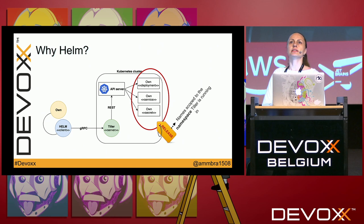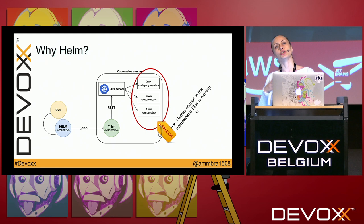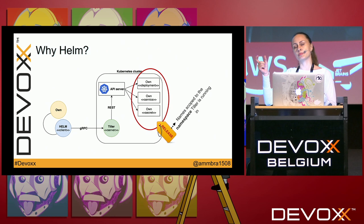In Helm 2, releases were scoped to the namespace where Tiller was running. In the classical Helm installation, Tiller is installed in the kube-system namespace, meaning a release name can only be used once — you cannot reuse the same release name across namespaces. This can be something that bothers you.